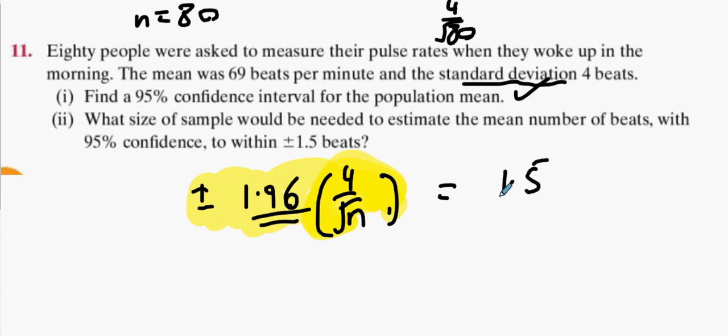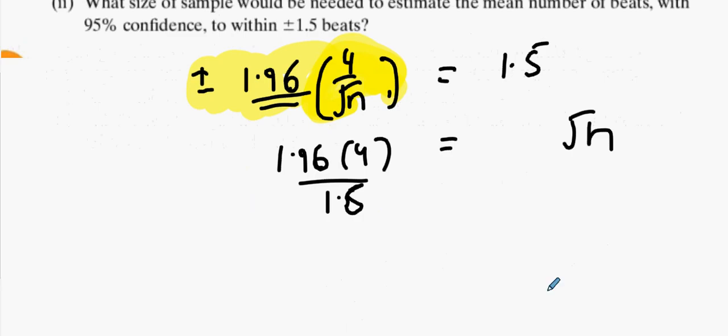So we put the n in here and we're going to put it equal to 1.5. Let's rearrange: 1.96 multiplied by 4 equals 1.5 root n. I'll just send the 1.5 underneath. Now square out both sides. It's 27.318, round up or round down? I have to round up because you want it below 1.5. So n equals 28.